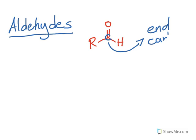For example, let's look at this: one, two, three, four carbons with a double bonded O and hydrogen. Since aldehydes are always at the end, this functional group is always at the end of the carbon chain.